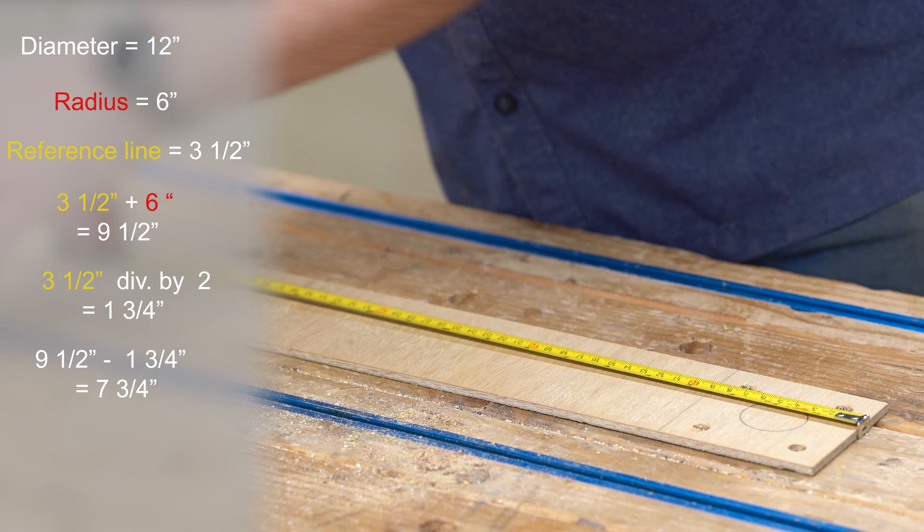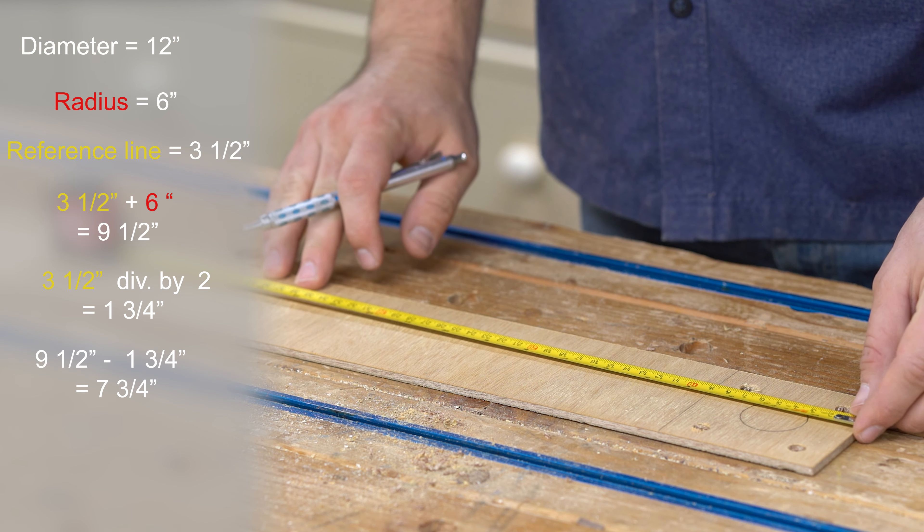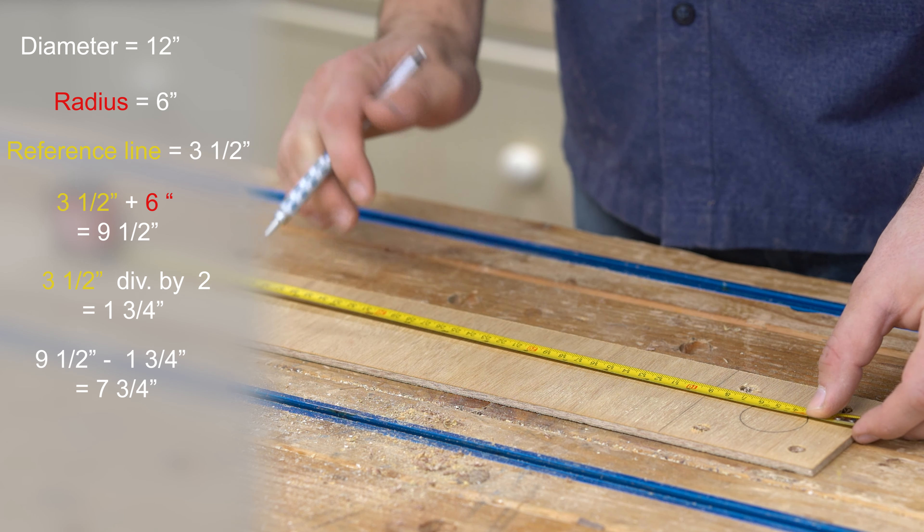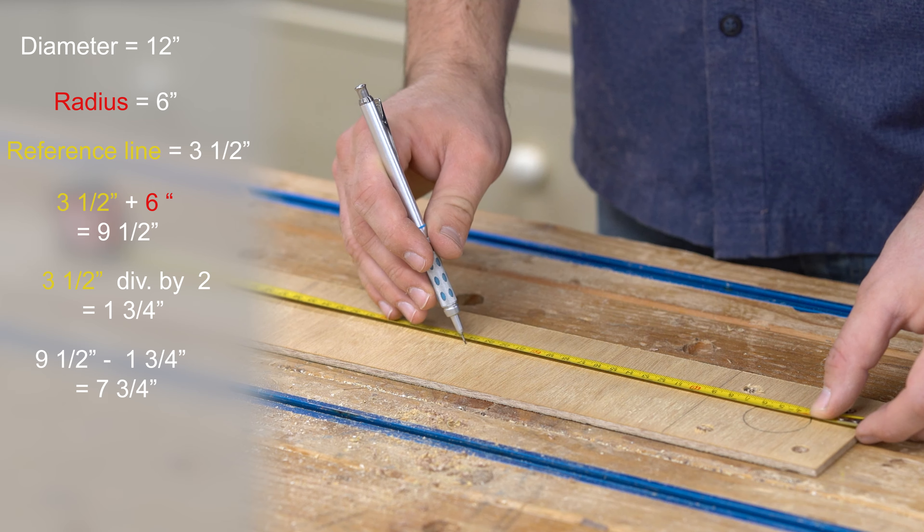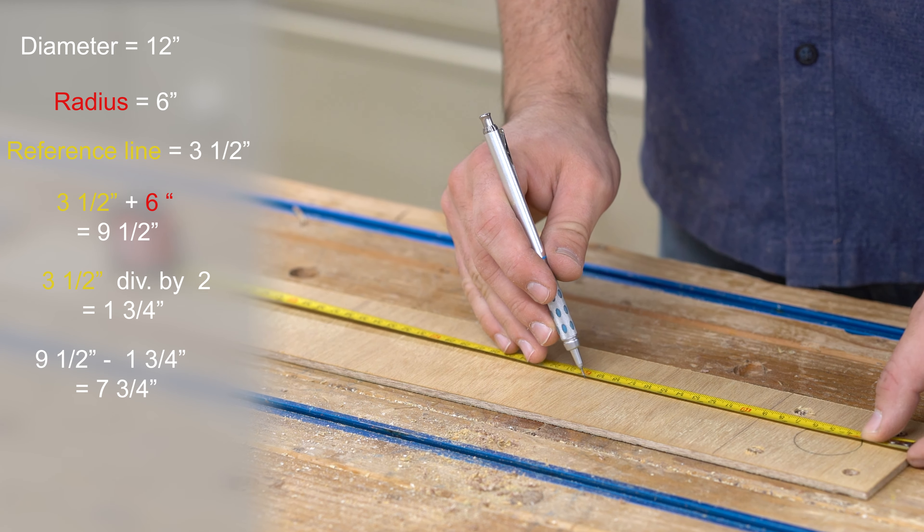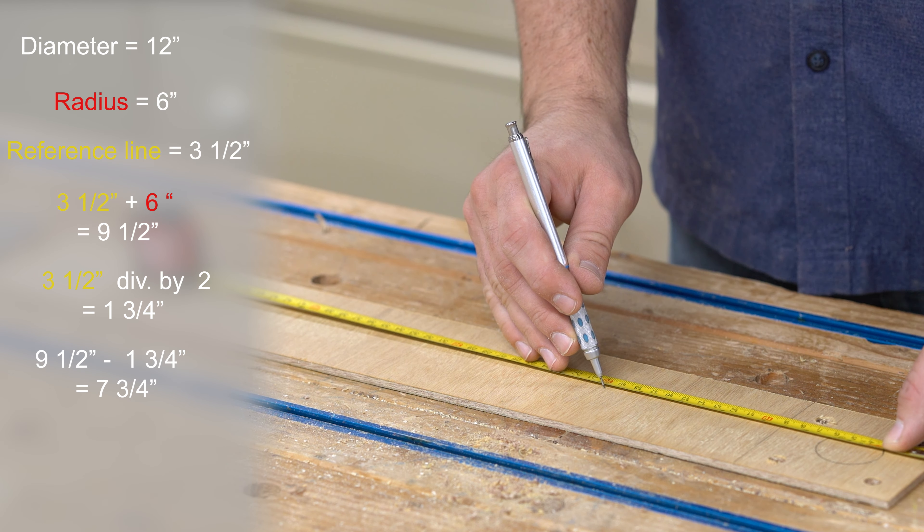Now we're not quite done yet. We haven't taken into account the size of the bit. Because we want a 12-inch disc, we want to add back the radius of the router bit. If we wanted a 12-inch hole, we would subtract the radius of the router bit.